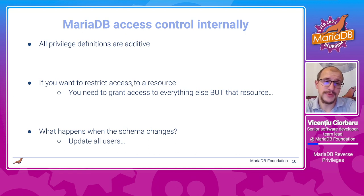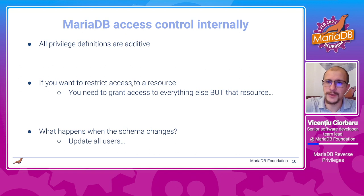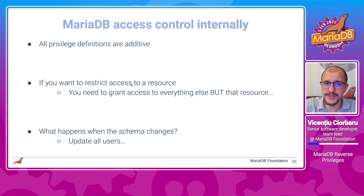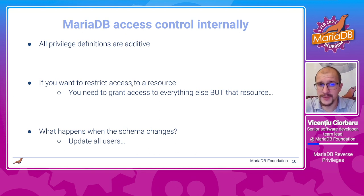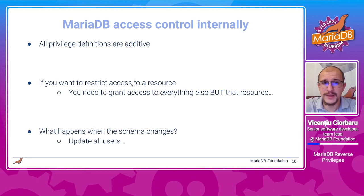Then you can go with finer-grained control over database-level or schema-level privileges, and then you can grant on tables and on columns. The problem with this is that all of these are additive, which means that if you have something granted at a higher level, then all the lower levels get it. And if you want to restrict something at a lower level, you're out of luck. The only way is to grant access to everything else at that lower level except that particular resource. And this comes up with problems — for example, what happens when the schema changes? If you add another table, your grant system will not cover that table, which means you have to update all your users, which frankly isn't really maintainable.